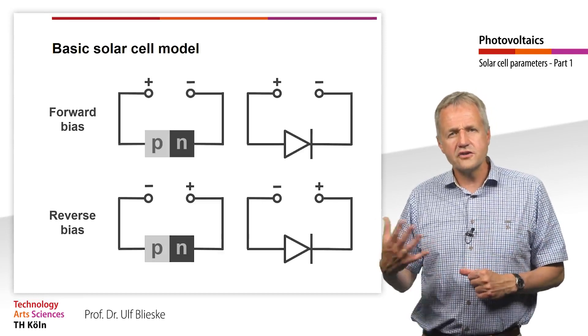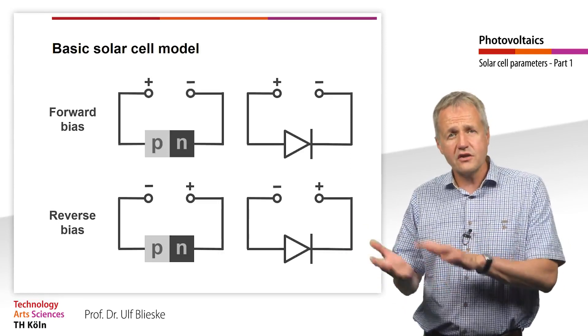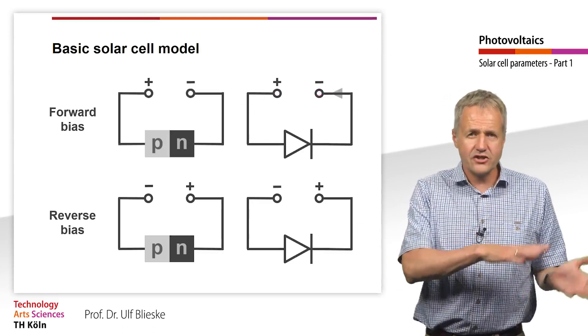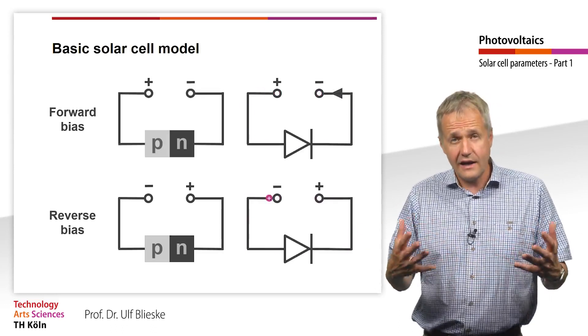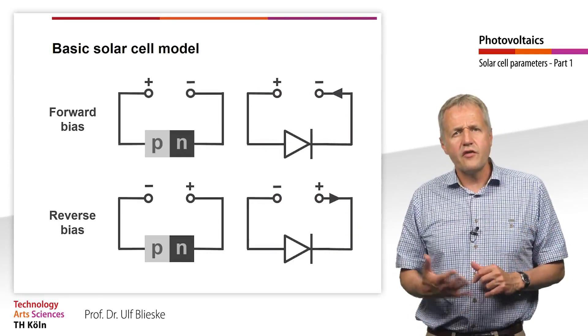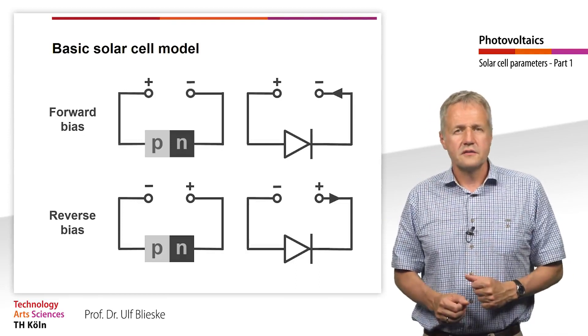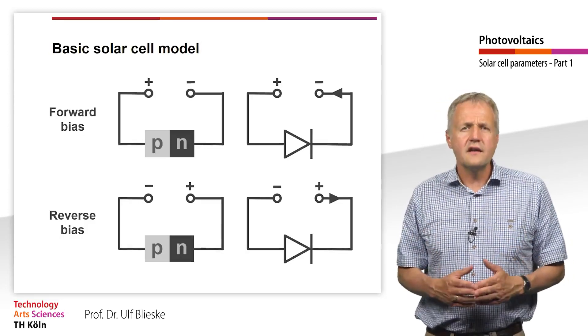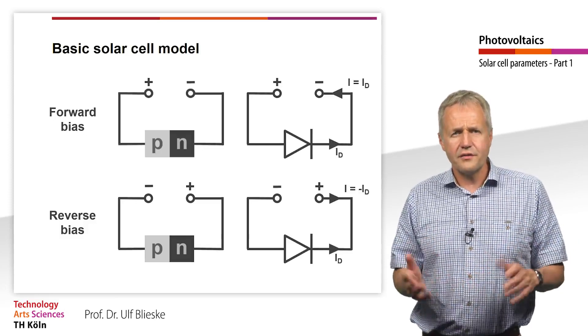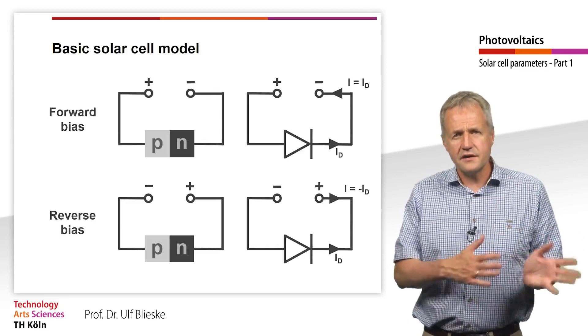Note that the conventionally agreed direction of the electrical flow points in the direction in which a positive charge would move, so exactly opposite to the direction of the electrical electron flow. The technical current direction therefore points in the same direction as the tip of the triangle of the diode symbol. We define the diode current Id. If a current flows in forward direction, Id is positive. If a current flows in the reverse direction, Id is negative.